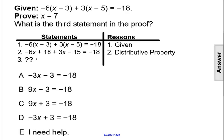Now we need a third statement. What is going to come next? Well, remember our goal is to prove that x equals 7. We're trying to solve for x. So what would you do next to solve for x from the equation in line 2?